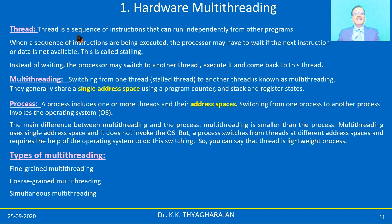What is a thread? A thread is a sequence of instructions that can run independently from other programs. When a sequence of instructions are being executed, the processor may have to wait if the next instruction or data is not available — this is called stalling. Instead of waiting, the processor may switch from one thread to another thread, execute it, then come back to the previous thread. This is called multithreading.